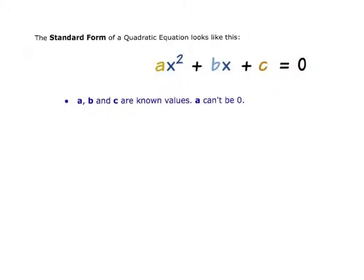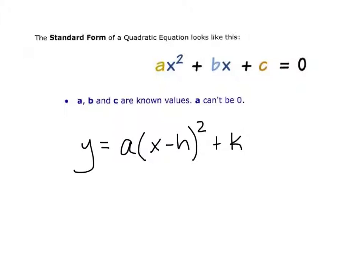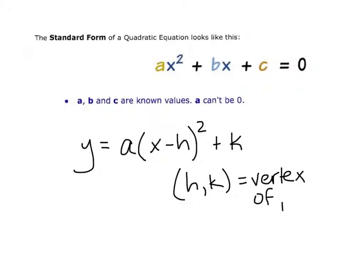We do also have something called vertex form, which looks like this: a times the quantity (x minus h) squared plus k. We're going to learn how to take a standard form equation and turn it into vertex form. In vertex form, (h, k) is actually the vertex of the parabola, and a is the number that determines the stretch or shrink, just like in the absolute value graphs.